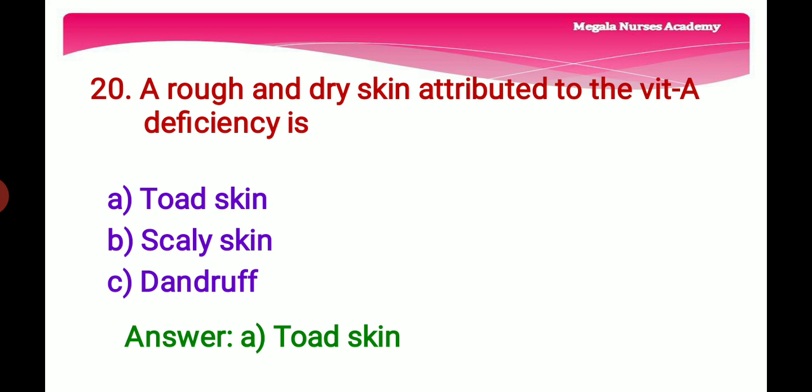Twentieth question: A rough and dry skin attributed to vitamin A deficiency — Option A: Xerosis, characterized by excessive dryness, wrinkling, and scaling of the skin. Option B: Scaly skin, a common symptom of dry skin occurring anywhere on the body. Option C: Dandruff, a skin condition mainly affecting the scalp. The right answer is Option A, xerosis.